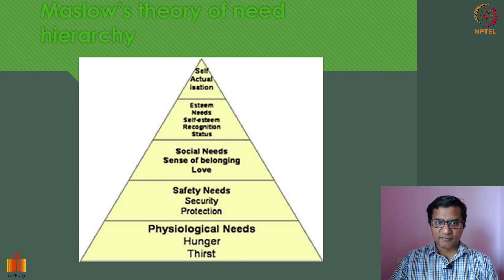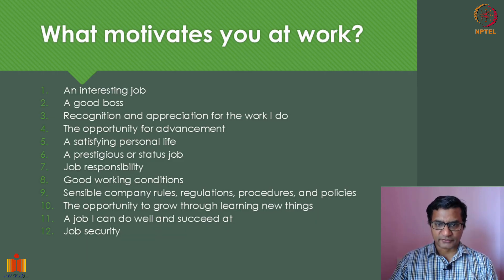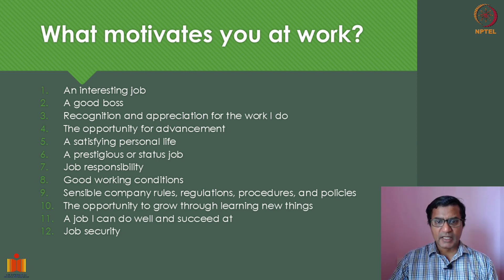We looked at a very famous theory called Maslow's theory of need hierarchy, in which we spoke about different levels of needs and how people move from one level to another. We also looked at some of the criticisms of this approach and how this theory can be used in organizational context. We also looked at different factors which motivate people in the workplace and classified them into two major categories: motivators and hygiene factors.